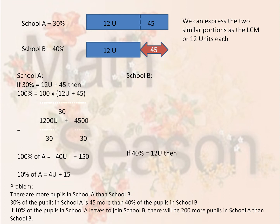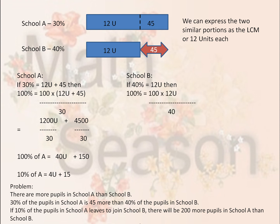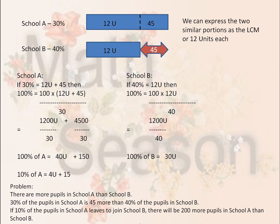For School B, if 40% is 12U, then 100% is 100 times 12U divided by 40. If you solve that, 100% of School B will be 30U.